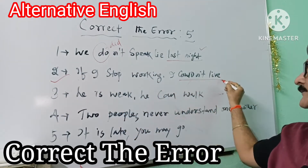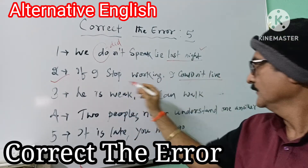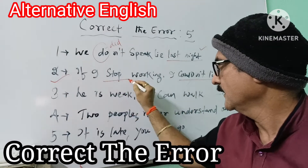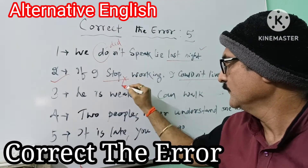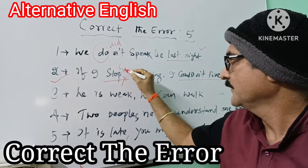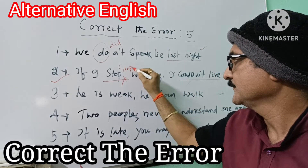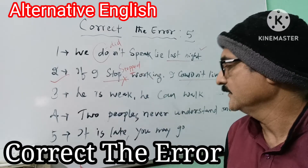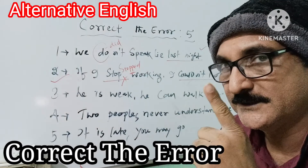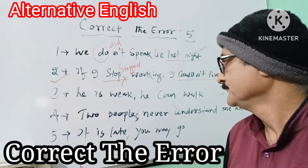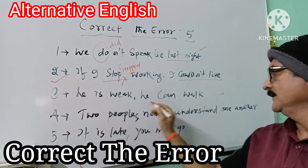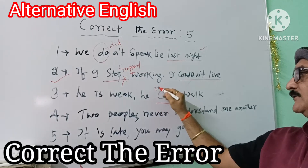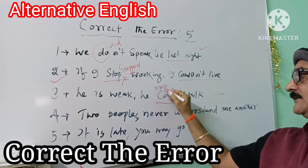In the conditional clause 'if I stop working, I could not live' — this is a past tense conditional. Also remember the spelling check: 'stopped' is spelled S-T-O-P-P-E-D. He is weak; he can — note the possibility here.